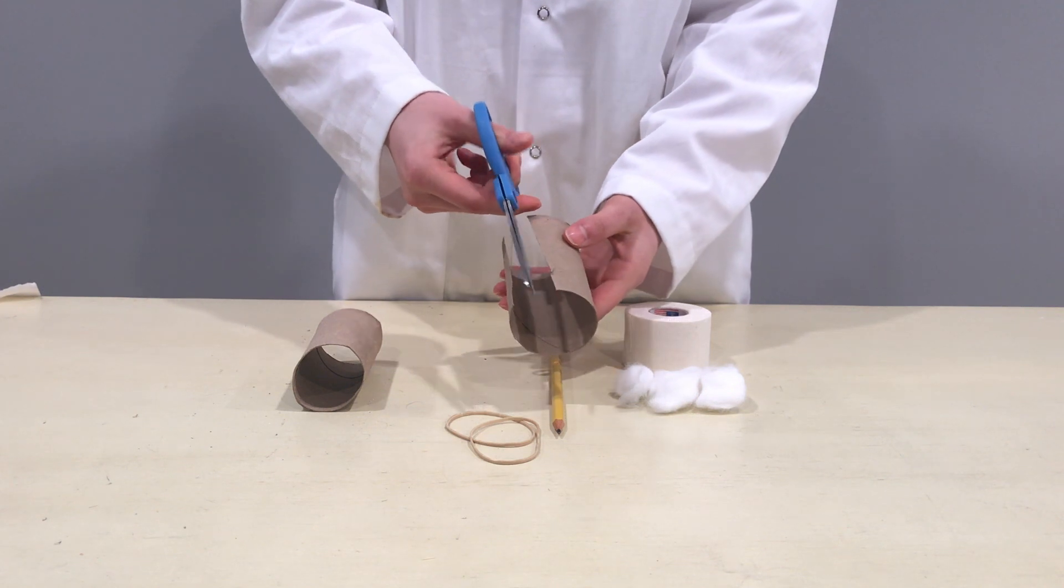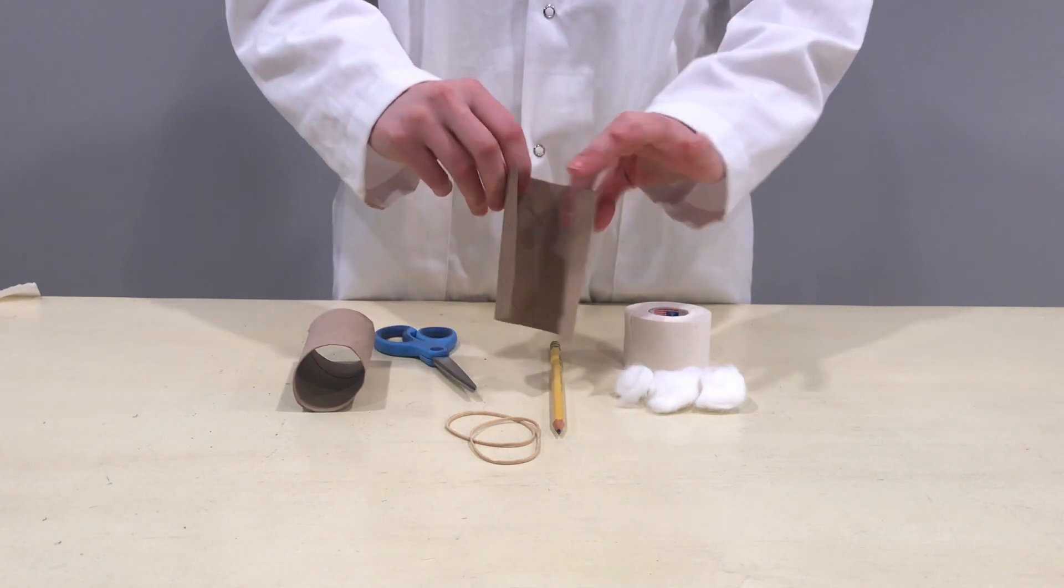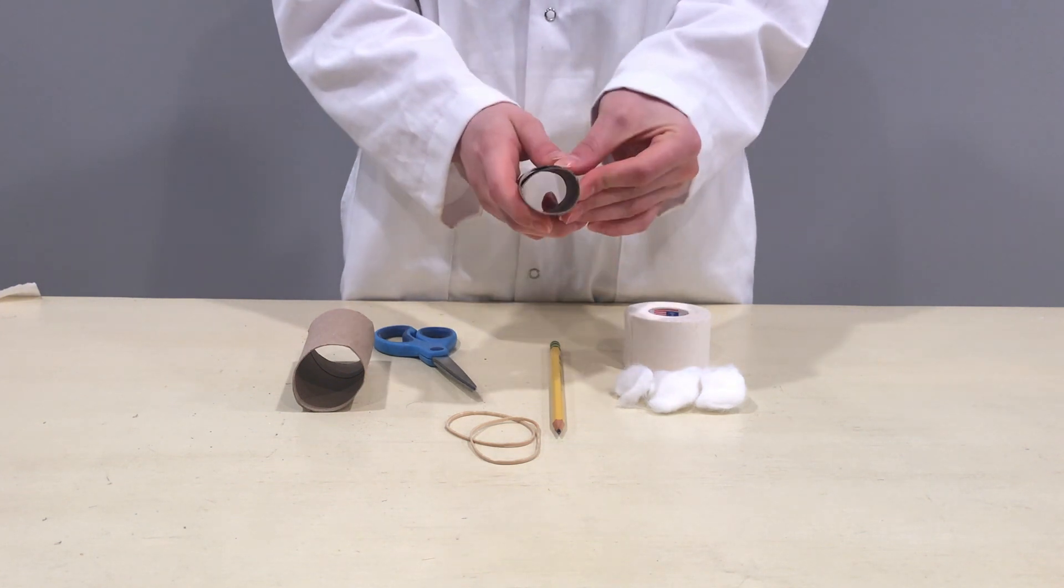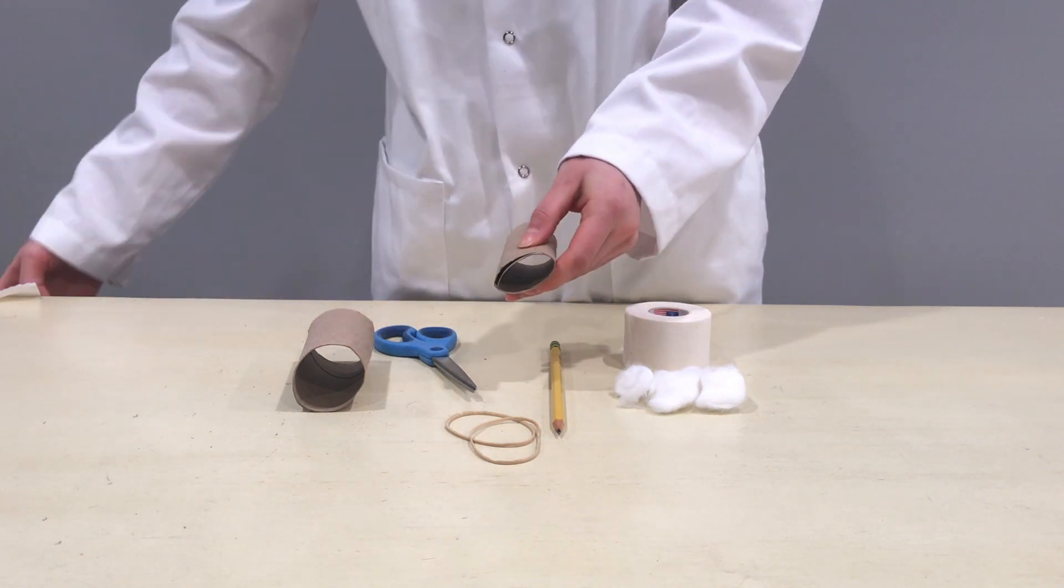Use scissors to cut a lengthwise slit down one of the toilet paper tubes. Squeeze the roll so that it becomes narrower, about one half the original diameter, and then tape around to hold in place.